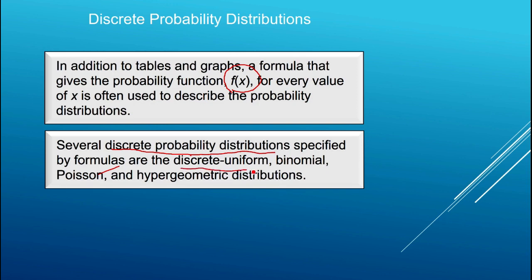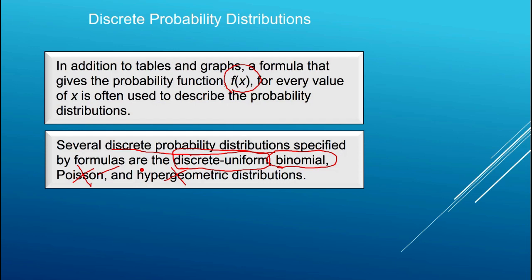They include the discrete uniform distribution. In the next chapter, we're going to talk about the continuous uniform distribution, so I won't talk too much more about that here. We have the binomial distribution, which is probably the most important discrete probability distribution covered in your textbook. The other two distributions covered are the Poisson and the Hypergeometric. While they're important and have important applications in statistics and econometrics, because of time I'm not going to cover them here. If you can understand the binomial probability distribution, moving on to the Poisson or Hypergeometric should pose little problem.